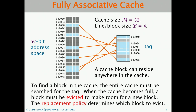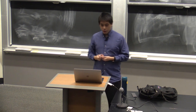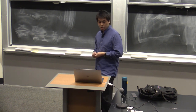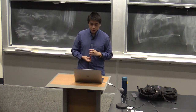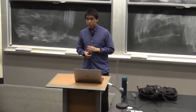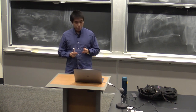When a cache becomes full, a block must be evicted to make room for a new block. This is known as the replacement policy. One common replacement policy is LRU, or least recently used — you evict the thing that was used the farthest in the past. Other schemes include second chance and clock replacement, but we won't discuss those in detail today.